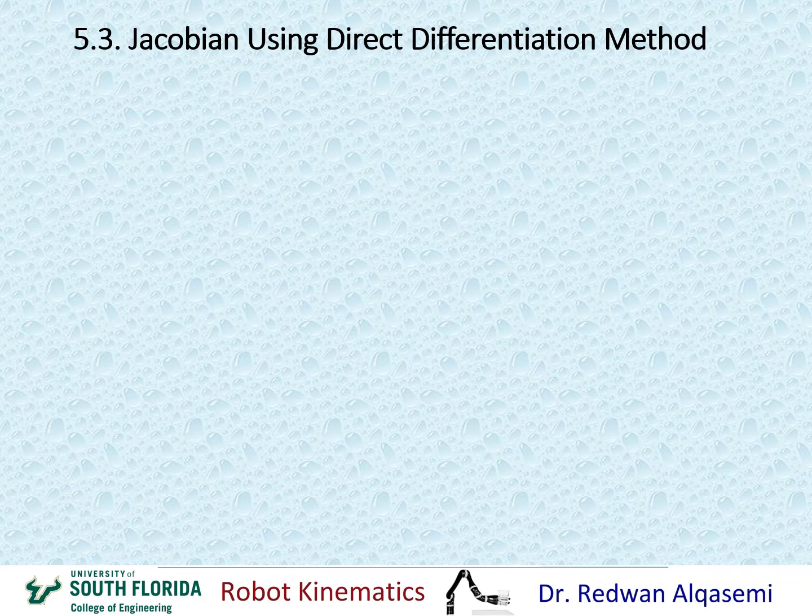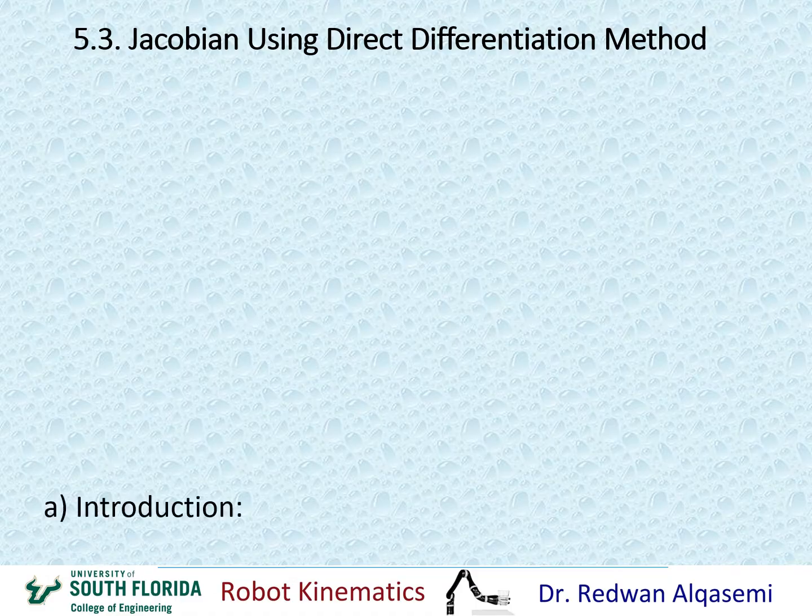Hello everyone. Now that we know how to find the Jacobian using velocity propagation, we're going to talk about how we can find the same Jacobian using the direct differentiation method.